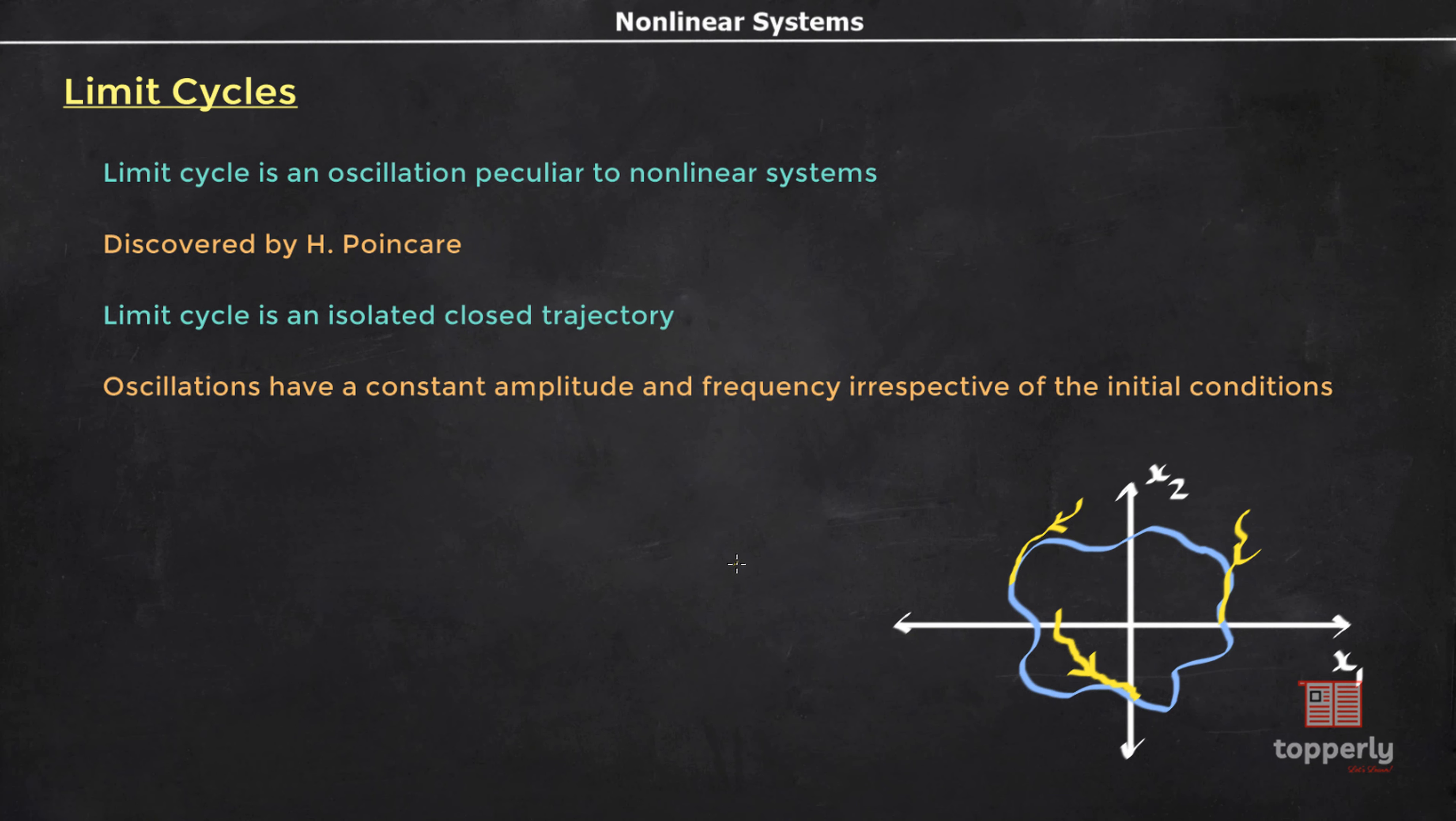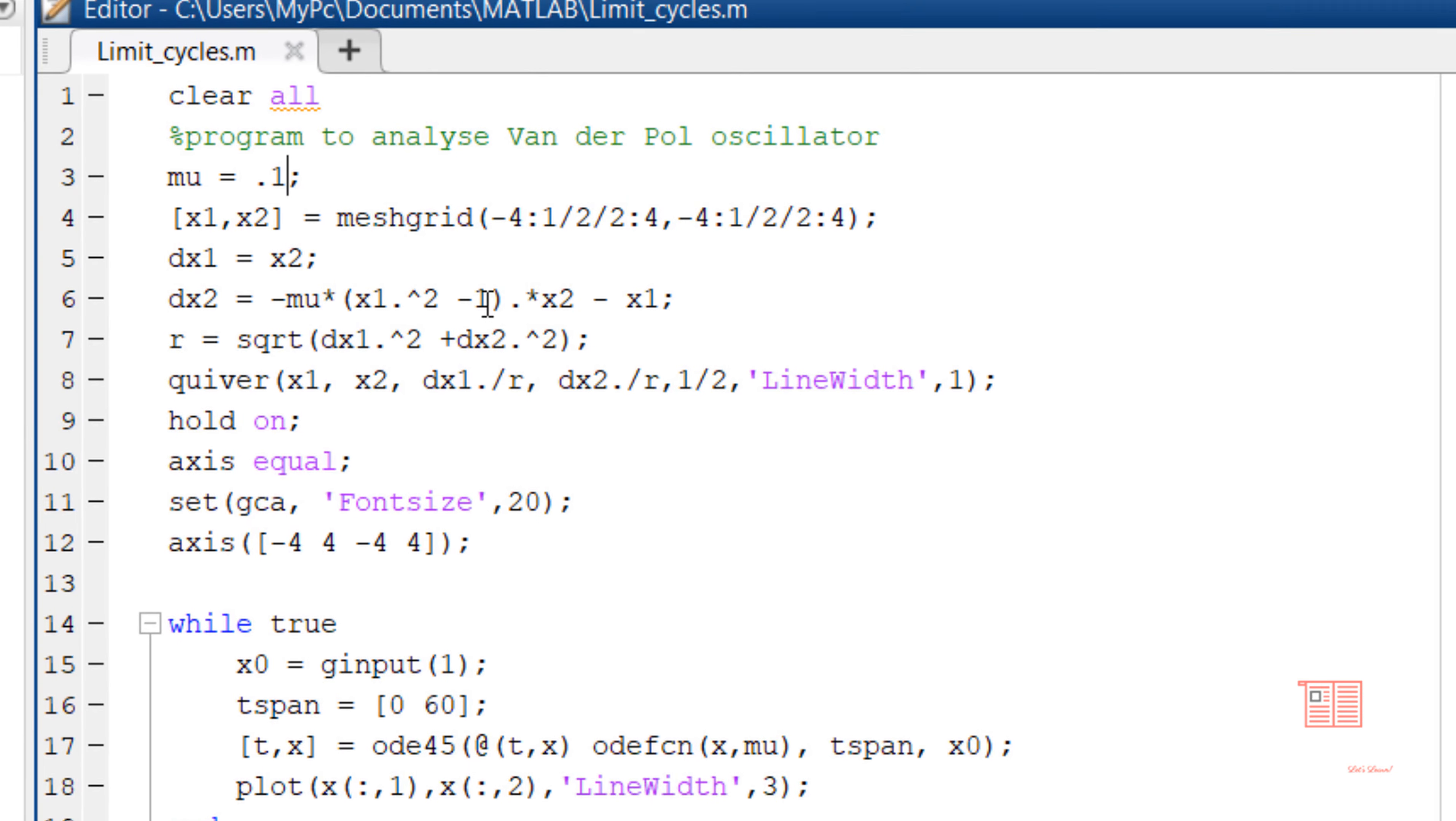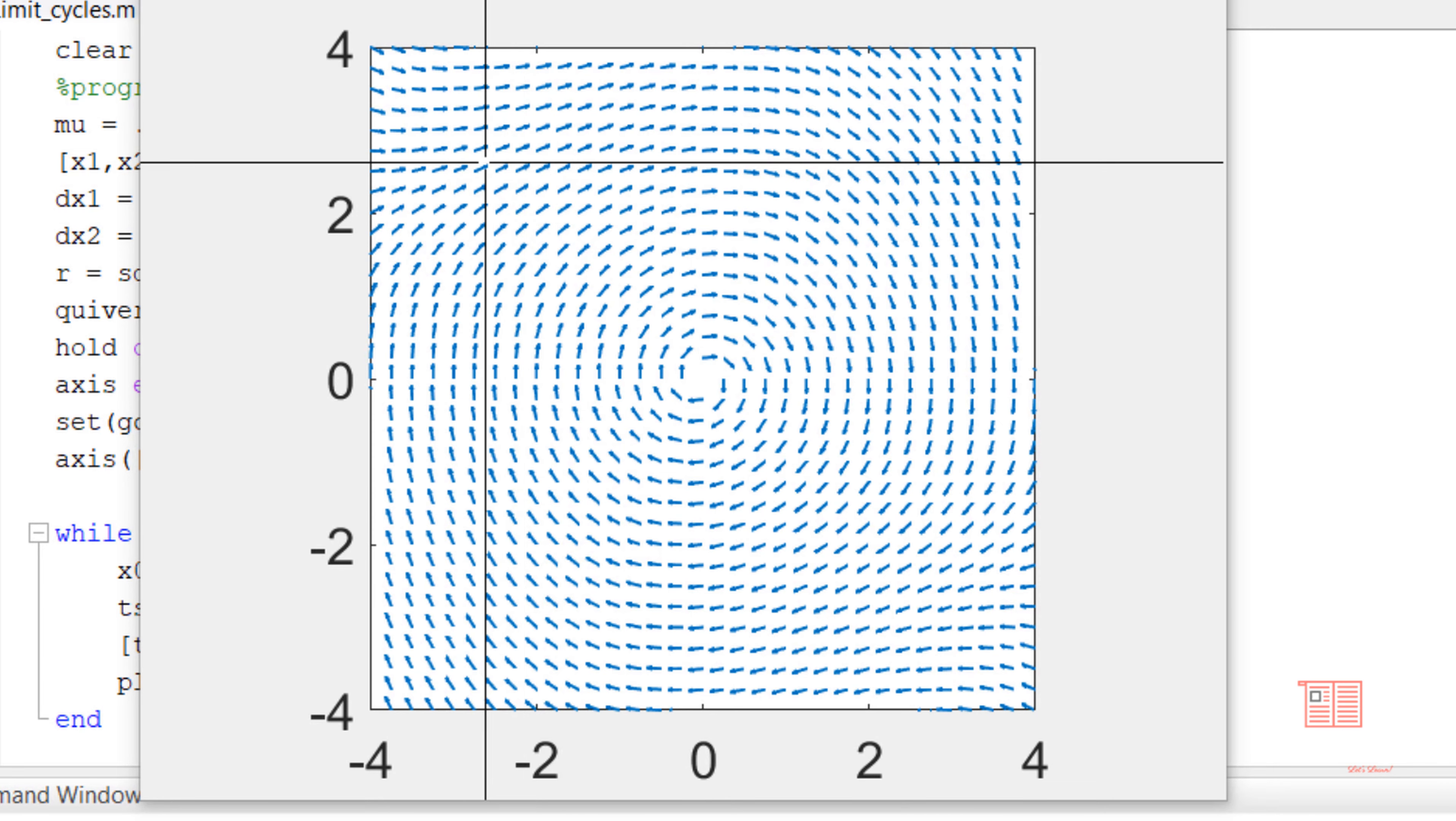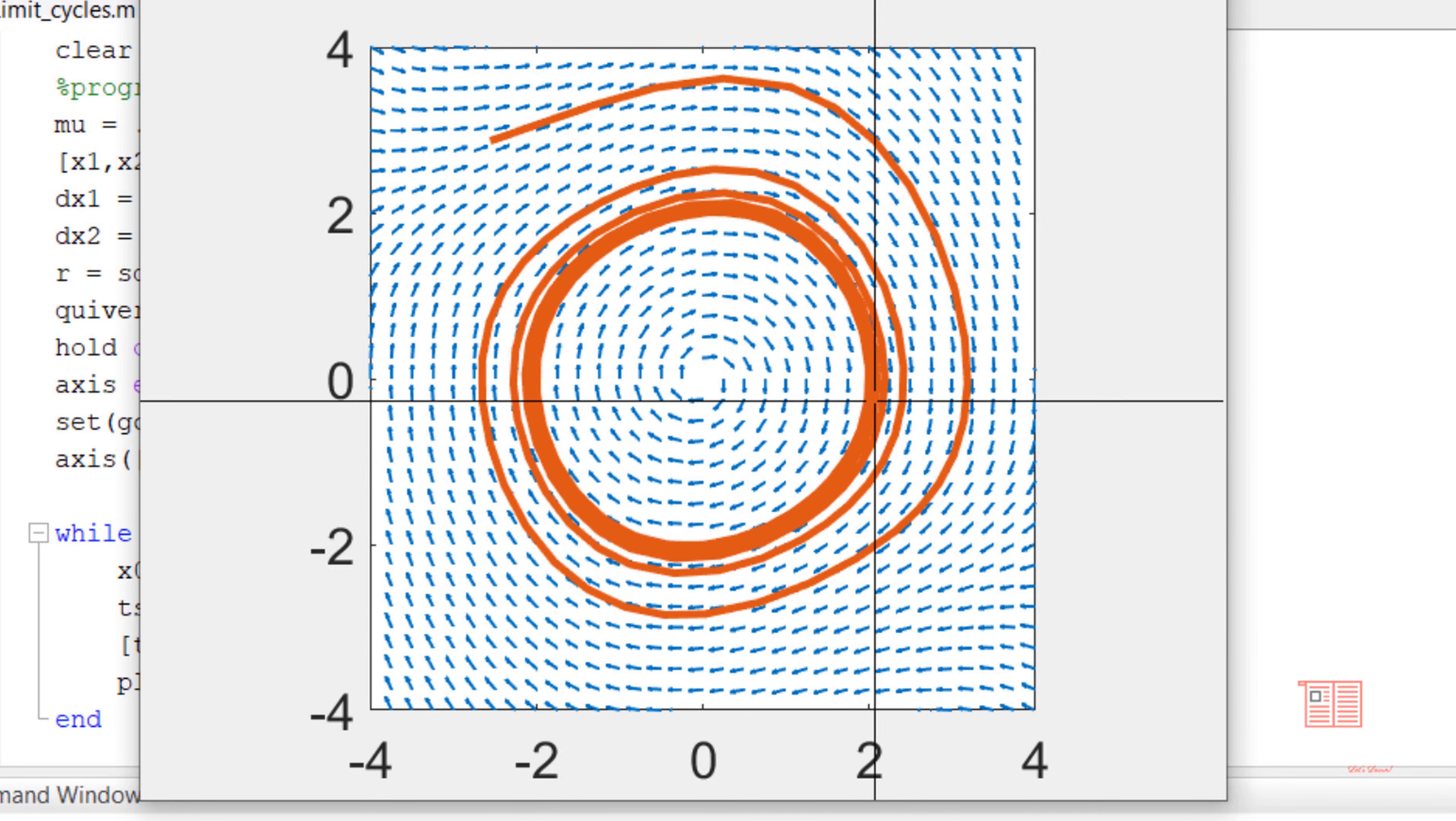Now, let's draw phase trajectories for a Van der Pol oscillator and I will show how the phase trajectories end up in closed loop no matter what the initial conditions are. This is a MATLAB code I have written for the Van der Pol oscillator with parameter mu equal to 0.1. This is the phase plane and the vector field shows the direction of the trajectory at each point. Let me randomly choose an initial point. You can see that the phase trajectory has formed a closed loop. This shows the existence of a limit cycle.